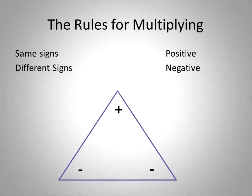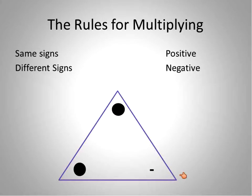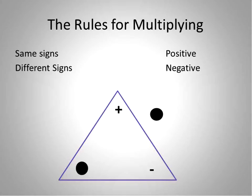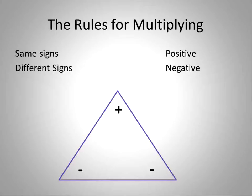There's a couple of helpful tools I want to share with you. A friend of mine from work uses this with her students. If there's a positive times a negative number, the result will be negative. And if there's a negative times a negative, the result will be positive. You can use this triangle — covering up the positives and negatives you're multiplying — and the one that's left showing is the result.